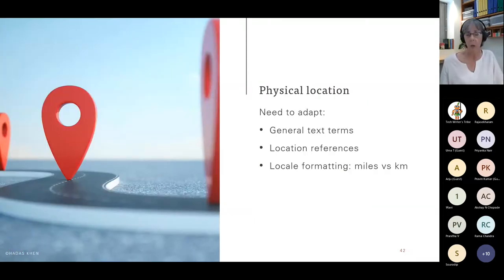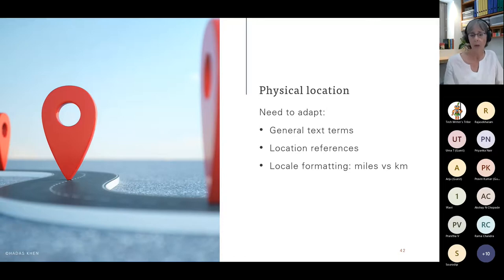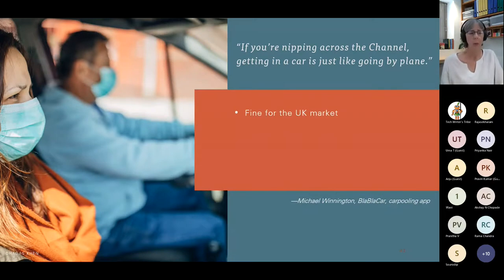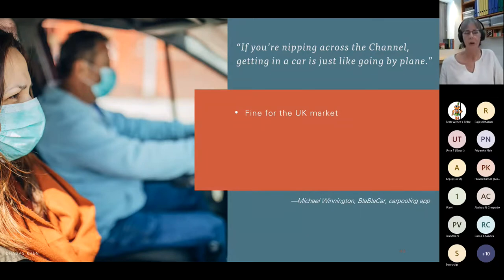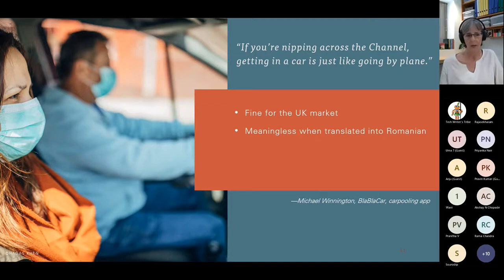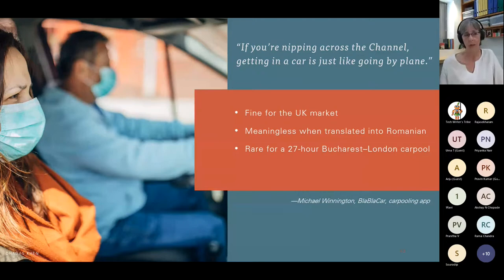We want to take into account physical location. We need to adapt general text terms, location references, and use locale formatting — which means miles in America, kilometers in Canada. For example, Michael Winnington, when he was at BlaBlaCar, did a self-analysis: the term 'if you're nipping across the channel, getting in a car is just like going by plane' was fine for the UK market but meaningless when translated into Romanian — and especially rare for a 27-hour Bucharest-to-London carpool. The problem? It wasn't localized.